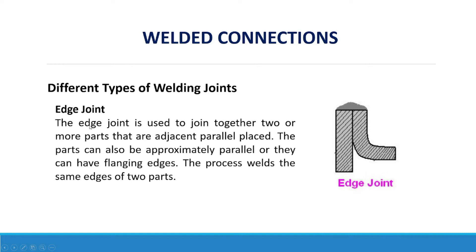The edge joint is used to join together two or more parts that are adjacent in parallel planes. The parts can also be approximately parallel or they can have flanging edges. The process welds the same edges of two parts.